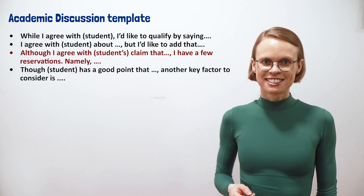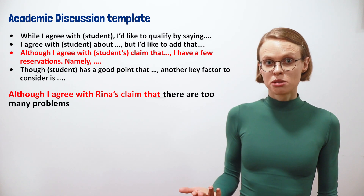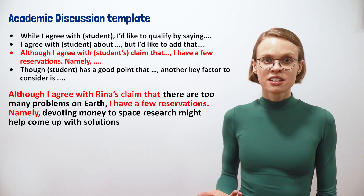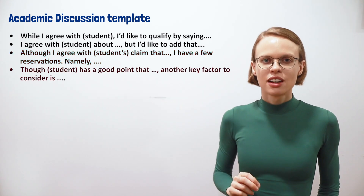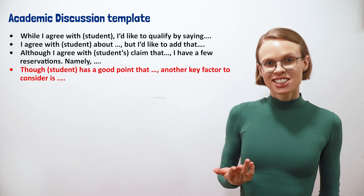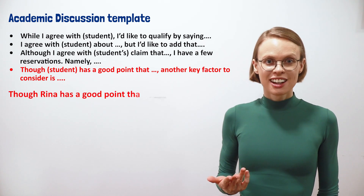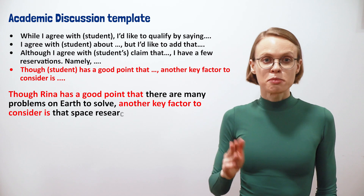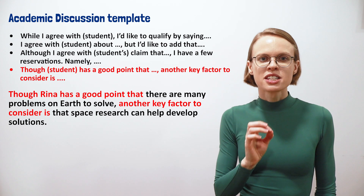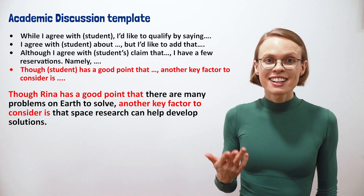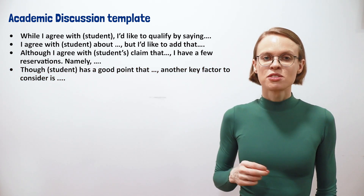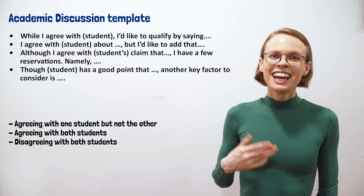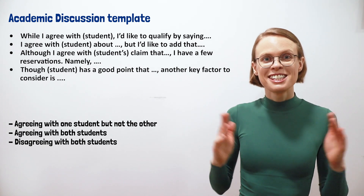Look at the third sentence starter: 'Although I agree with Rina's claim that there are too many problems on earth, I have a few reservations. Namely, devoting money to space research might help come up with solutions for some of those problems.' Finally, here's the last sentence starter — it's actually the one I used in my sample answer: 'Though Rina has a good point that there are many problems on earth to solve, another key factor to consider is that space research can help develop solutions.' The template also has sentence starters for agreeing with one student but not the other, agreeing with both students, and disagreeing with both students. In other words, there are sentence starters to write any type of response you might choose to give.